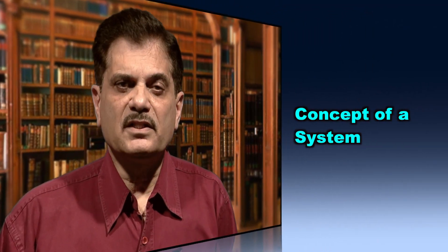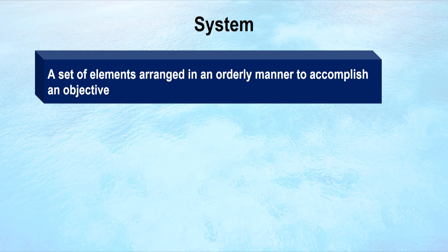Now, coming to the concept of a system: a system refers to a set of elements arranged in an orderly manner to accomplish an objective. A system may contain a number of elements, and each element has its own function. All these elements are connected to each other, and the overall functioning of the elements gives the overall objective of the instruction.